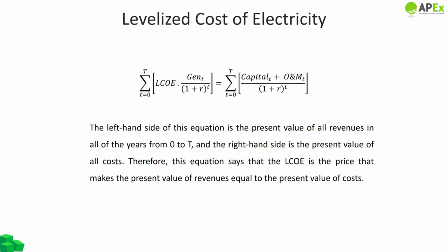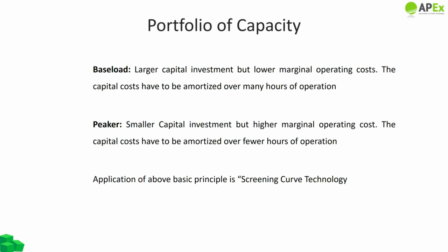The LCOE equation shown on screen states that the left-hand side represents the present value of all revenues over years zero to T over the life of the project, and the right-hand side is the present value of all costs. Therefore LCOE is the price that makes the present value of revenues equal to the present value of costs. To determine which types of capacity are most needed, we must look beyond the simplistic representation of LCOE. For example, how much of the capacity should be baseload and how much should be peakers, and how much intermediate generation capacity is needed.